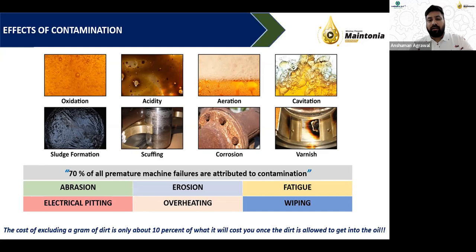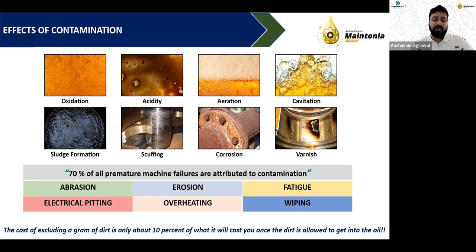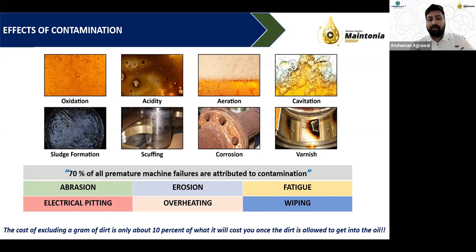Air contamination or bubble contamination occurs due to design issues in the lubrication system, such as missing baffles, return lines splashing lube rather than submerging below tank surface, or cavitation in the pump. When entrapped air causes hydrolysis, thermal degradation, or sustained foaming, it has long-term negative effects on lube components like pumps.